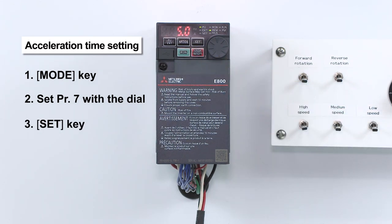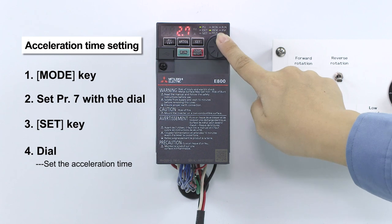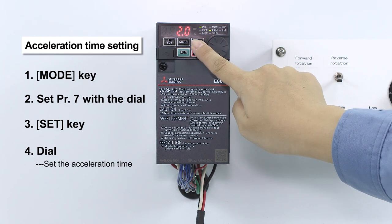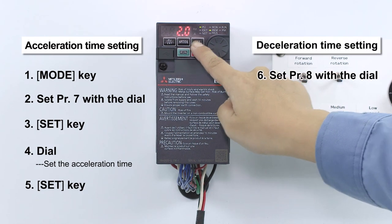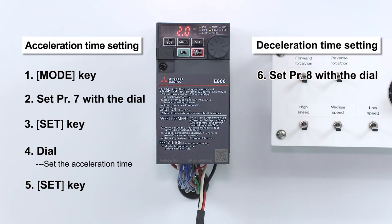Parameter 7 controls the acceleration time from when the motor starts until it reaches the selected frequency. Parameter 8 controls the deceleration time from the selected frequency until the motor stops.